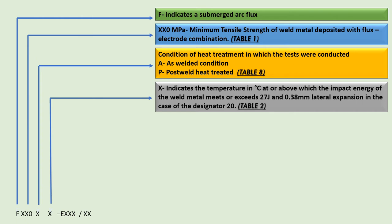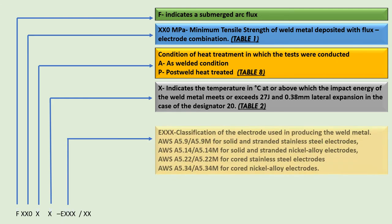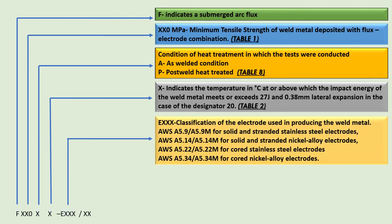After this, we have a numeric designator. This number indicates the temperature in degrees Celsius at or above which the impact energy of the weld metal meets or exceeds 27 joules and 0.38 mm lateral expansion. In the case of the designator 20, the details about impact test requirements are given in SFA 5.39 Table 2.